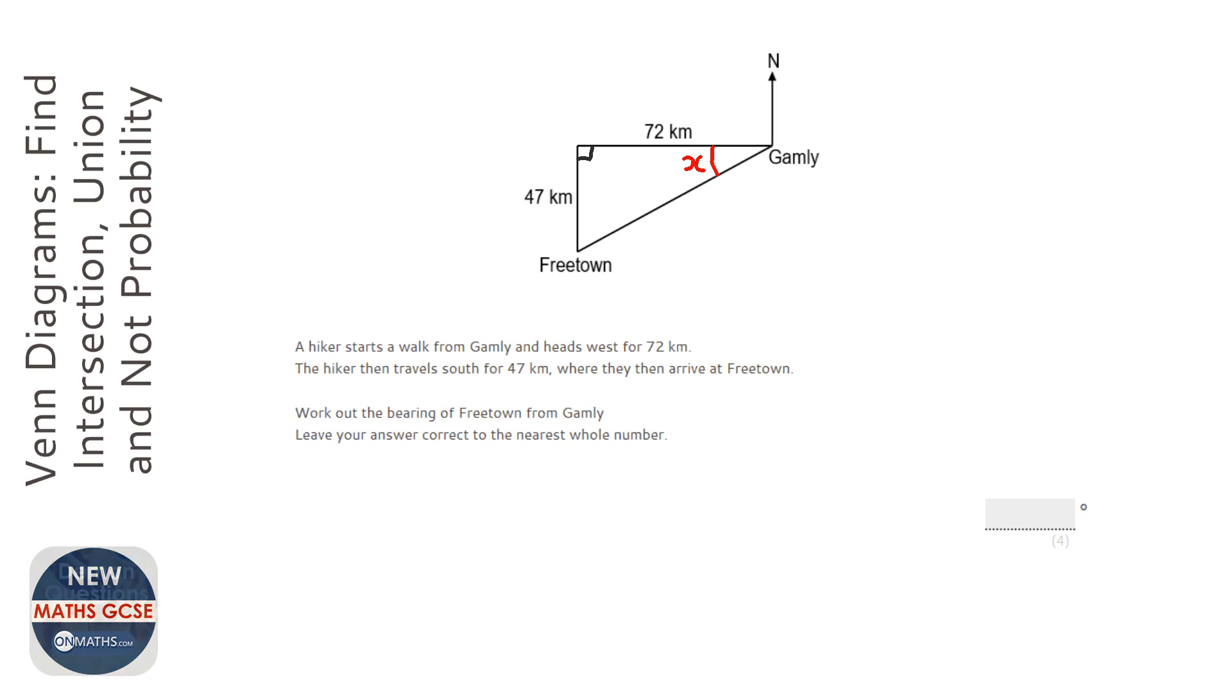I'm going to call this angle x. Now to find x, we need trigonometry, and to do trigonometry, we need to label the sides. So we've got the opposite here, which is opposite the angle we want, we've got the adjacent here, and we've got the hypotenuse here.